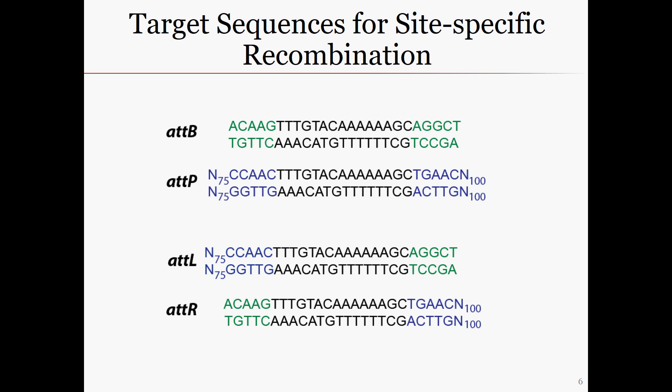Different enzymes catalyze the forward and reverse reactions. The commercial enzyme mix BP clonase catalyzes the forward reaction of att-B and att-P into att-L and att-R. This mix contains the integrase enzyme, whose activity will be described in the next few slides, and the cofactor integration host factor, or IHF, a non-enzymatic protein that binds DNA and assists in forming protein-DNA complexes.